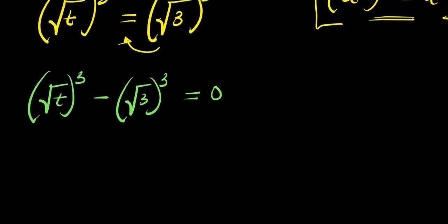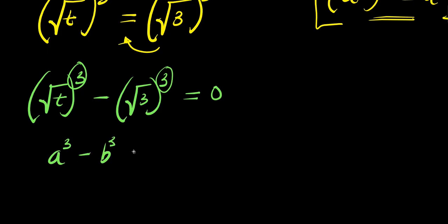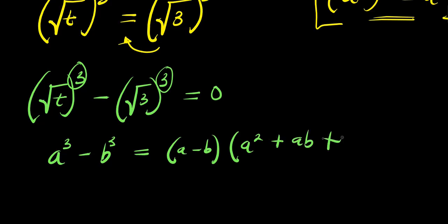At this point, the exponent here is 3 and this is 3, so we are going to expand this using the difference of cubes identity: if you have a to the power of 3 minus b to the power of 3, this equals a minus b, times a squared plus ab plus b to the power of 2.